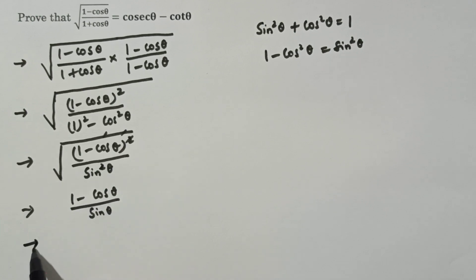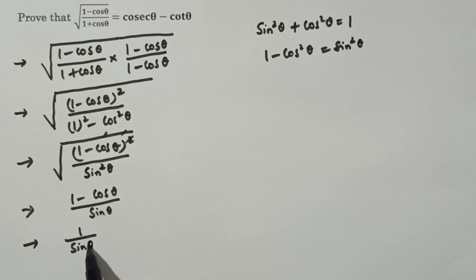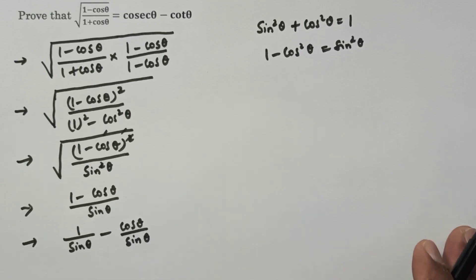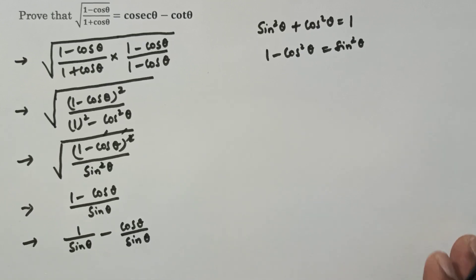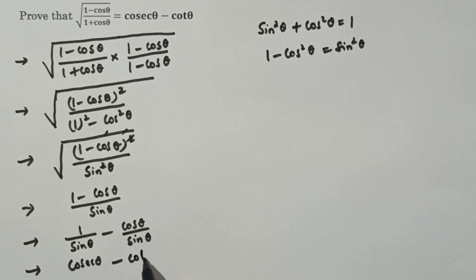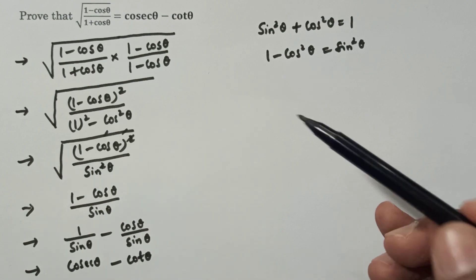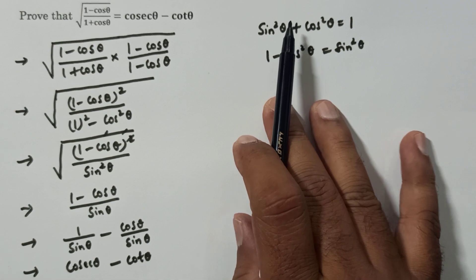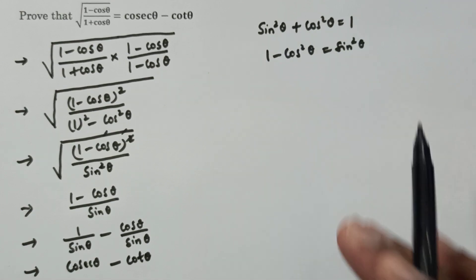Split the fraction: 1/sinθ - cosθ/sinθ. Since 1/sinθ = cosecθ and cosθ/sinθ = cotθ, therefore √((1 - cosθ)/(1 + cosθ)) = cosecθ - cotθ.